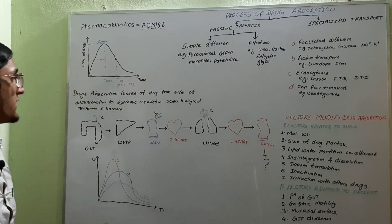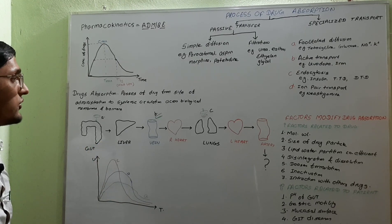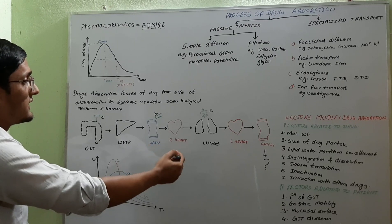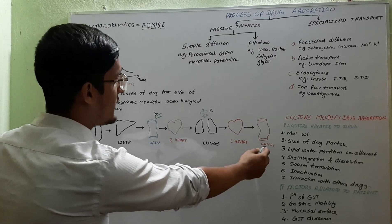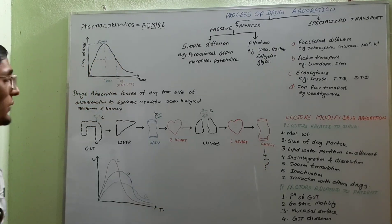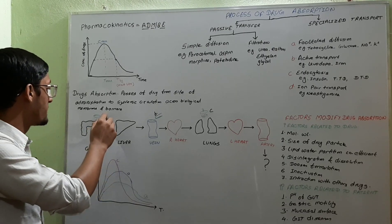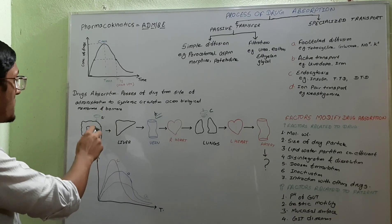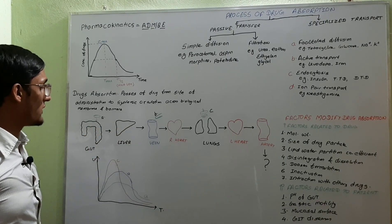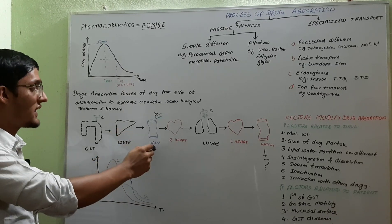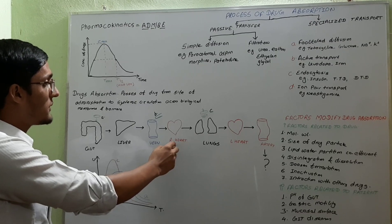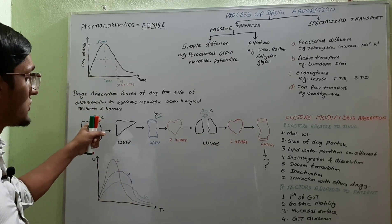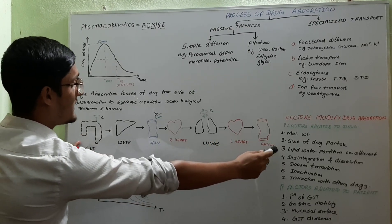Now I am going to explain this figure showing the blood supply to the whole body. This is the gut, liver, inferior vena cava, right side of the heart, lungs, left heart, and finally the artery to the tissue. When we give a drug in oral form, like a tablet or capsule, the drug goes to the GIT, is absorbed from the gut, reaches the liver via portal circulation, then goes to the inferior vena cava, right heart, lungs, left heart, and finally to the artery. This is a lengthy process.